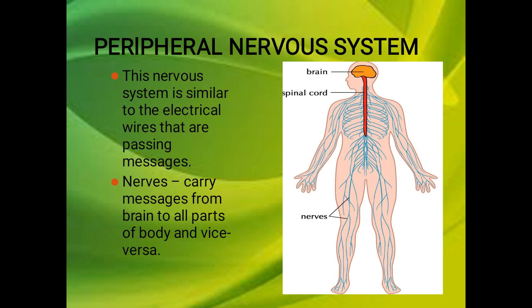The nerves look like wires connecting computers in a network. In our body, all parts are interconnected with the help of nerves. Nerves act like wires through which messages can be passed from the brain to all parts of the body. These nerves constitute the peripheral nervous system. What constitutes the peripheral nervous system? The nerves in our body constitute the peripheral nervous system.